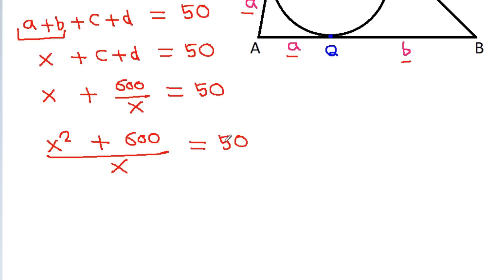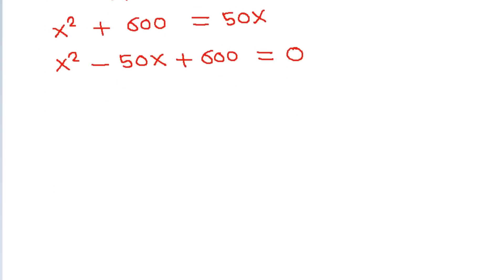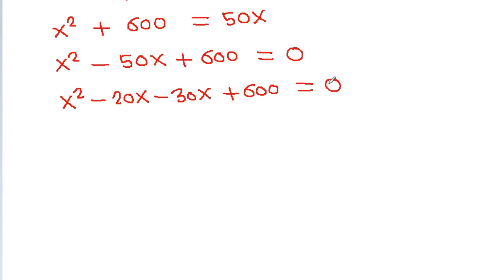From x equals 600 divided by (c plus d), and x plus (c plus d) equals 50, if we cross multiply we get x squared plus 600 equals 50x. And so x squared minus 50x plus 600 equals 0. Factoring: x squared minus 20x minus 30x plus 600 equals 0.